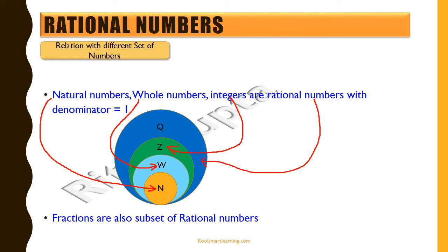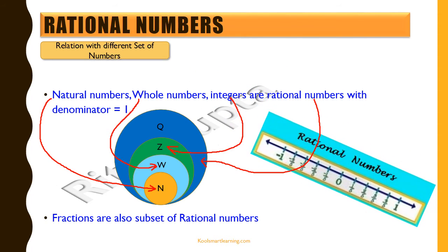Now let's try and understand how fractions are related to rational numbers. Fractions are also a subset of rational numbers because fractions are nothing but a part of a whole. They are only positive, which means they are the quotient of two whole numbers instead of two integers. So on the number line, the right-hand side from zero represents fractions, but the whole number line represents rational numbers. So rational numbers are a superset of fractions.